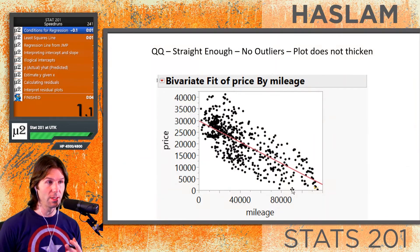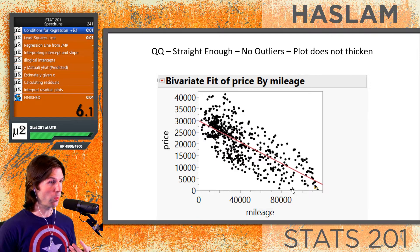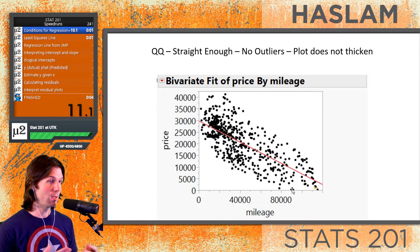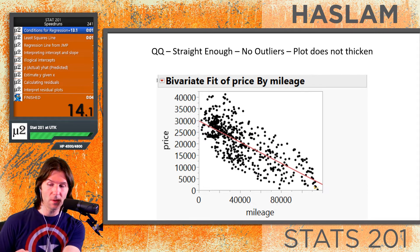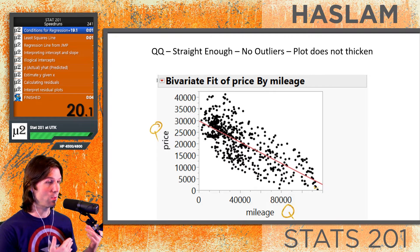Let's start with the conditions for regression. There are four conditions, and three of them are the ones we learned for correlation. QQ stands for Quantitative Variables — I call it QQ because there are two quantitative variables. This condition is met here because price and mileage are both quantitative variables.